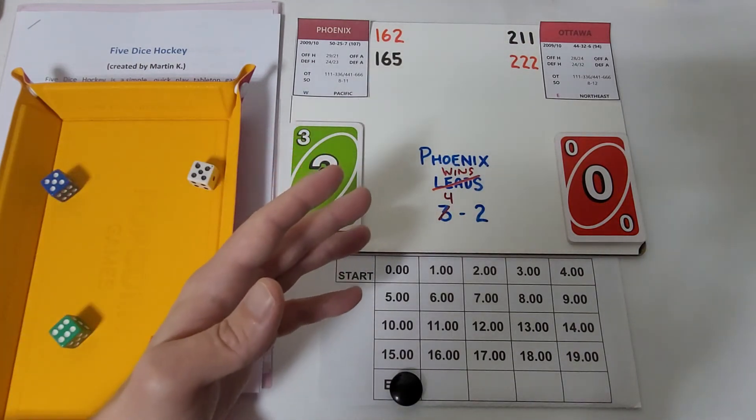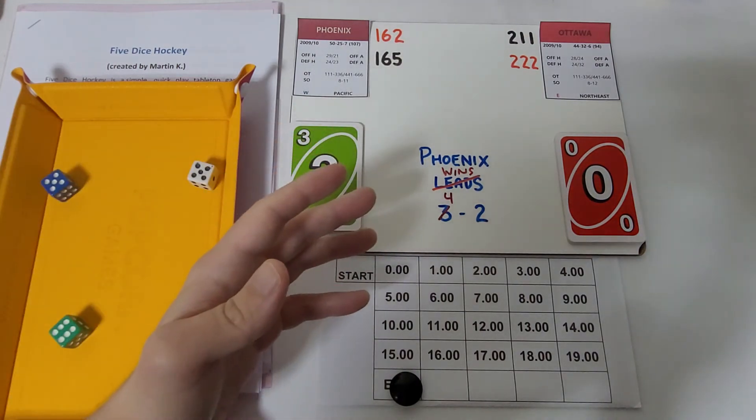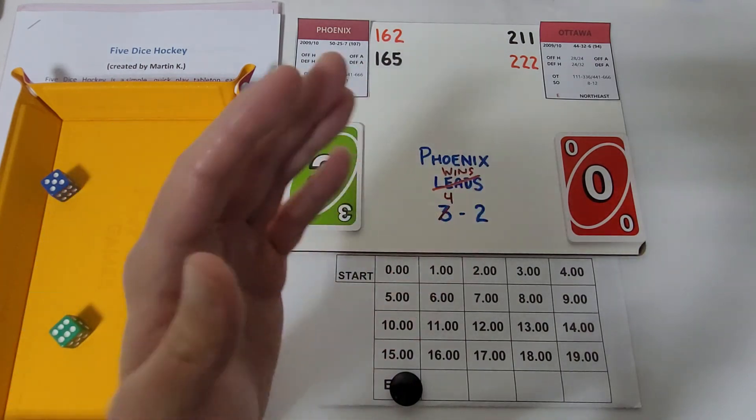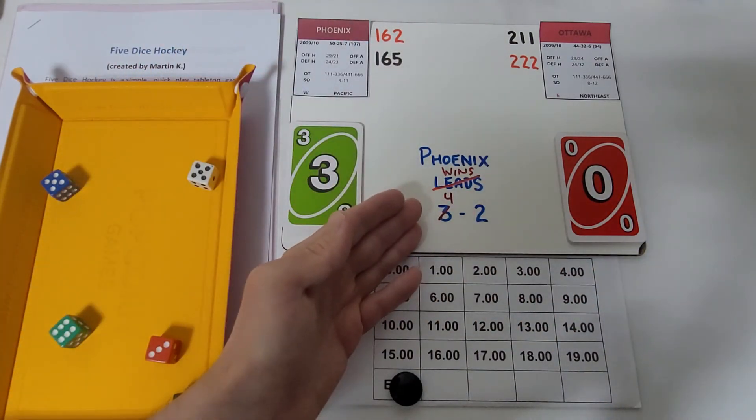This was a really good series. Phoenix took a one-nothing lead, then Ottawa was up two-one, and then Phoenix obviously headed into this up three-two in the series. A pretty good series while it lasted without having a game seven.